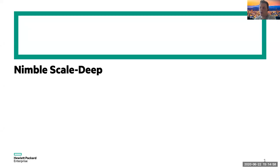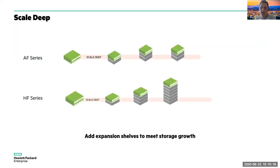I want to walk through what it's like to scale deep on a Nimble storage array, or adding capacity to a Nimble storage array. Most of this content comes from Nimble admin training, but there's some additional information in here that you might find relevant. Nimble can scale multiple ways, and one of the ways is scaling deep, done by simply adding more disks. This can be done by filling out empty bays inside an all-flash array or adding additional shelves to all-flash, adaptive flash, or hybrid arrays.